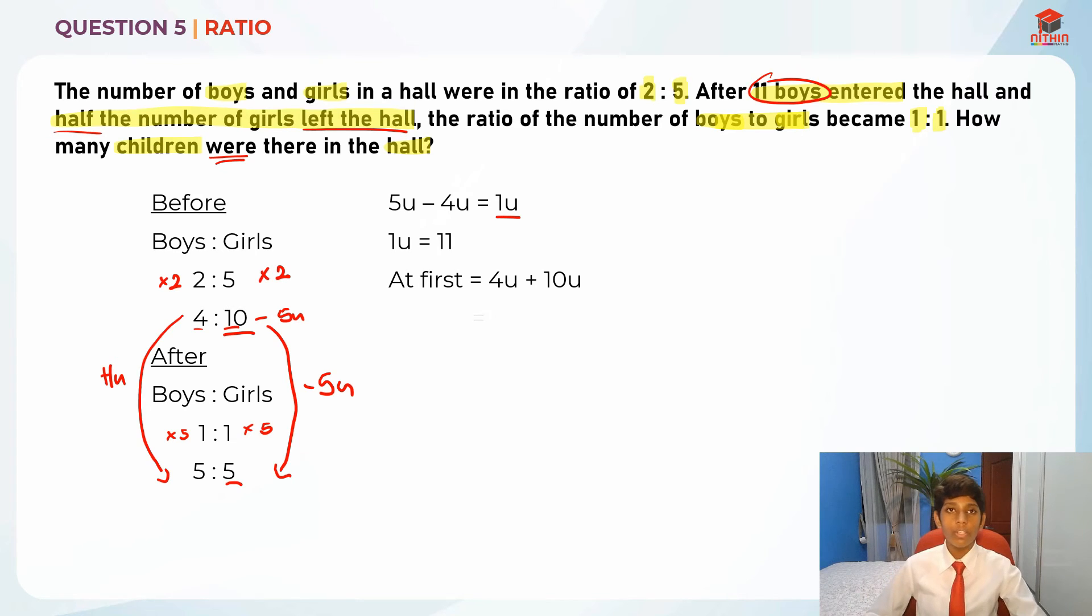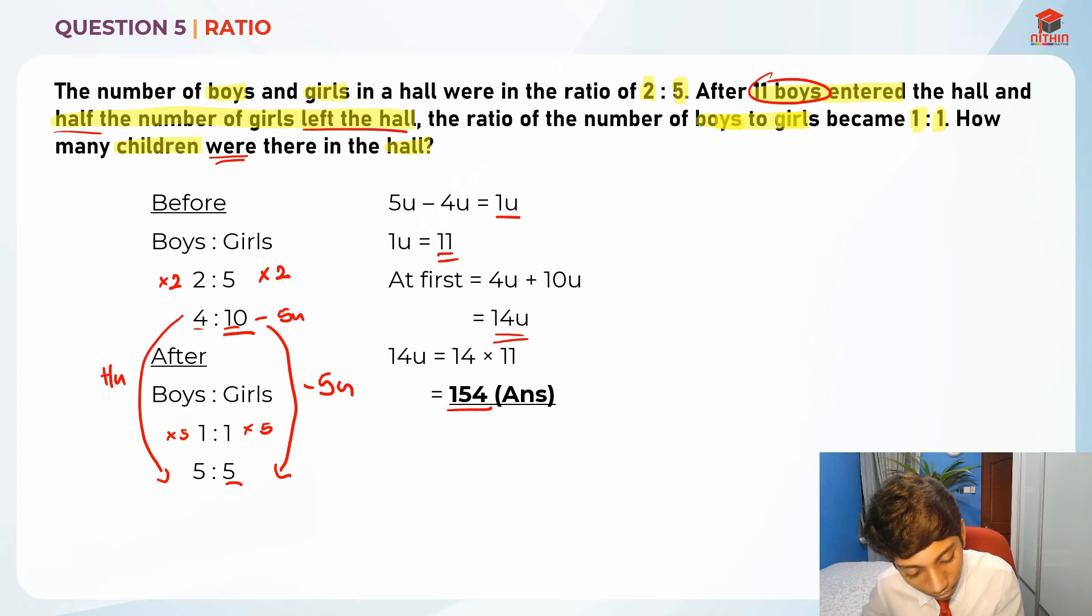So 14 units of children is actually 1 unit, we know that is 11. So 14 units is basically 11 times 14. So 14 times 11 gives us 154. So this is the answer to this question.